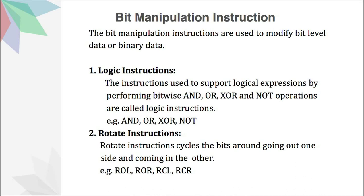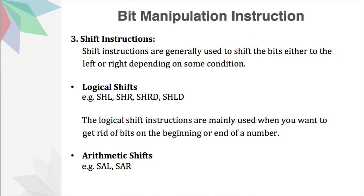The second type is rotate instructions. The rotate instructions cycle the bits around — going out one side and then coming in the other. Some examples for rotate instructions are ROL, ROR, RCL, and RCR. The third type of bit manipulation instruction is the shift instructions, which are generally used to shift the bits either to the left or right depending on some conditions. Shift instructions can be either arithmetic or logical. Logical shift instructions are mainly used when we want to get rid of bits on the beginning or end of a number — examples are SHL and SHR. Examples for arithmetic shifts are SAL and SAR.